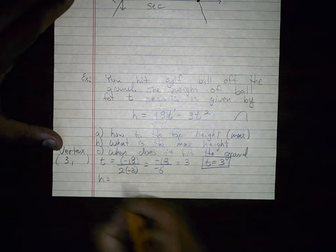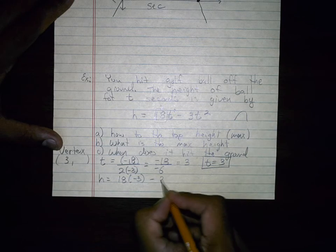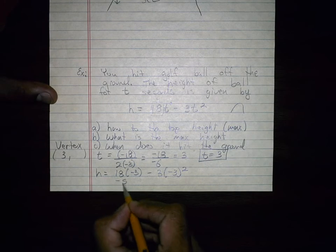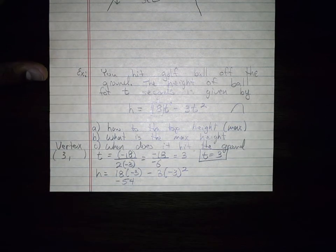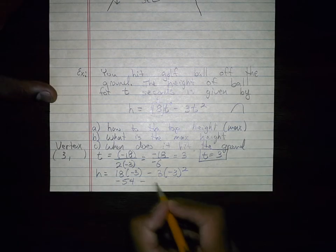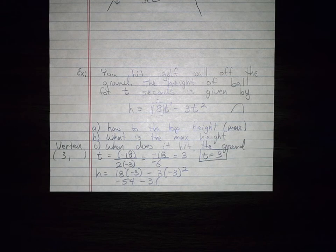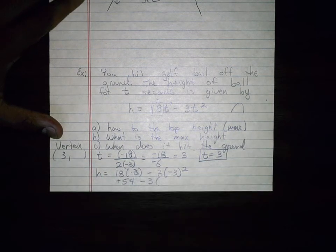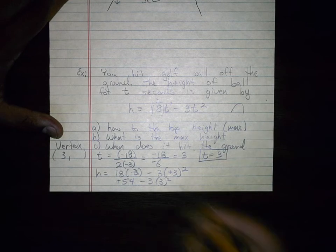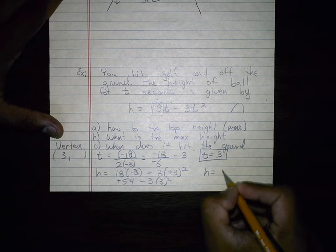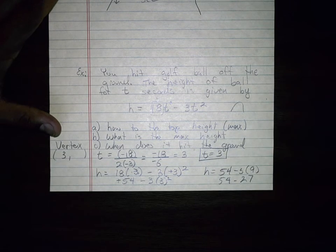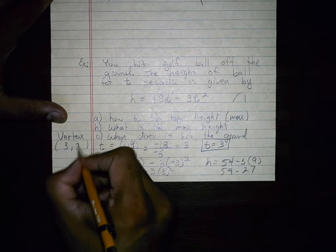So now let's go ahead and find the h. And the h is 18 times 3 minus 3 times 3 squared. So that's positive 54 minus 3 times 9. So I'm running out of room here. I'm going to say h equals 54 minus 27, and that should be 27. So my height is 27.